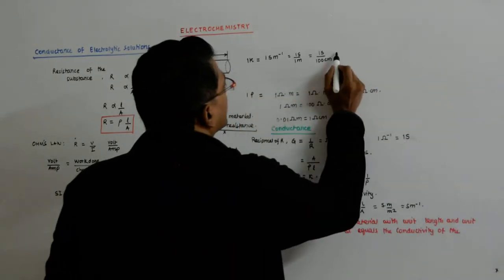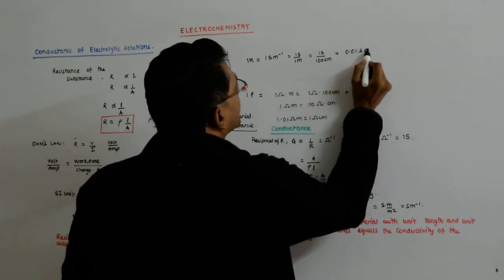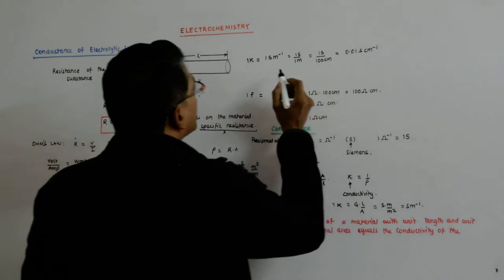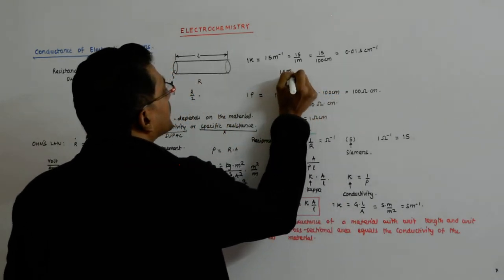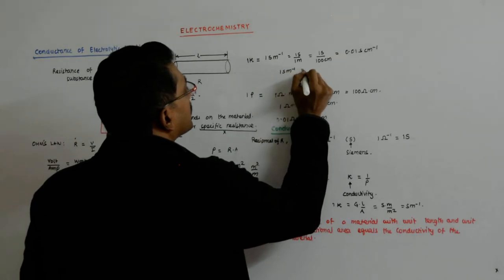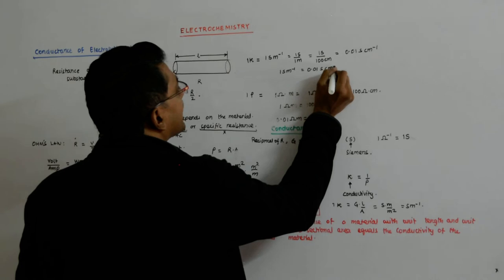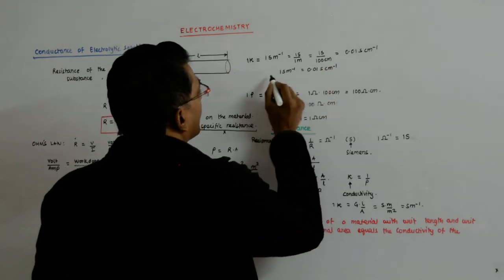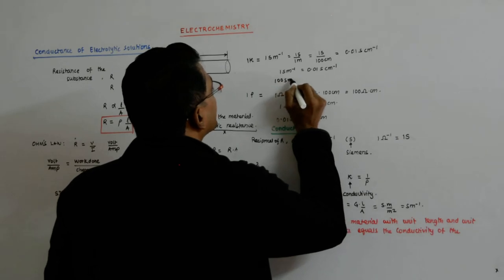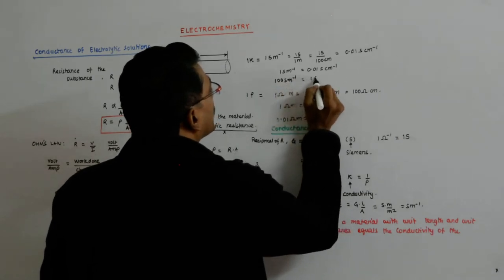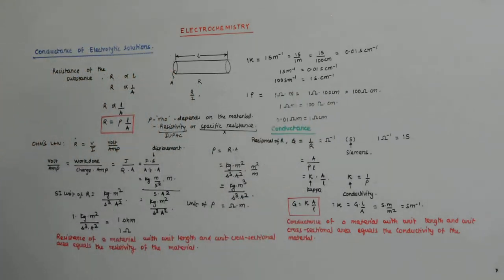So this is equal to that. So that is equal to 0.01 Siemens per centimeter. So I have in the end 1 Siemens per meter is equal to 0.01 Siemens per centimeter. And if I divide or multiply both sides by 100, I'll get 100 Siemens per meter is equal to 1 Siemens per centimeter. So that is the conversion.